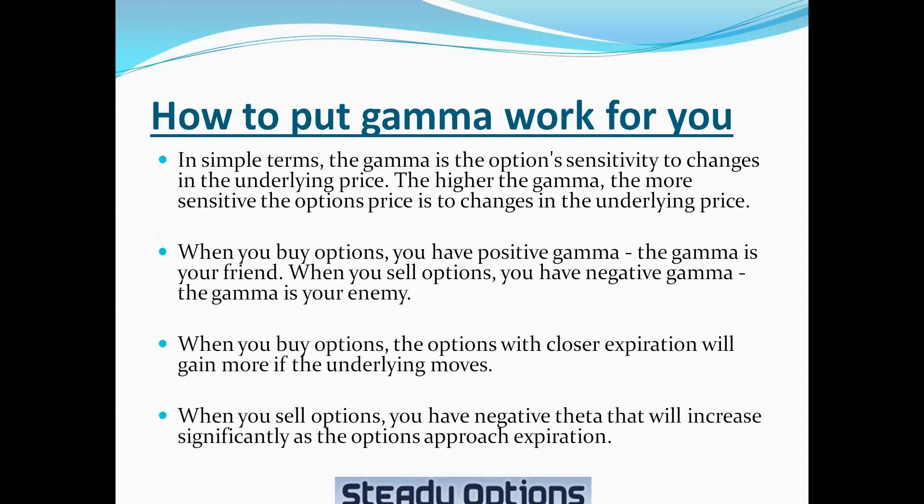When you buy options and expect a significant and quick move, you should go with closer expiration. The options with closer expiration will gain more if the underlying moves. Of course, there is a trade-off: if the underlying doesn't move, the negative theta will start to kick in much faster. When you sell options, you have negative theta that will increase significantly as the option approaches expiration. This is the biggest risk of selling weekly options.